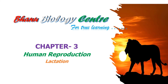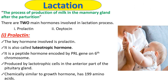In this unit we will learn another concept, that is lactation — how the milk production process takes place in human females after giving birth. Lactation is the process of production of milk in the mammary glands after parturition. Mammary glands prepare themselves for milk production, and after delivery of the baby the production of milk by the mammary glands for nourishing the newborn baby is called lactation.